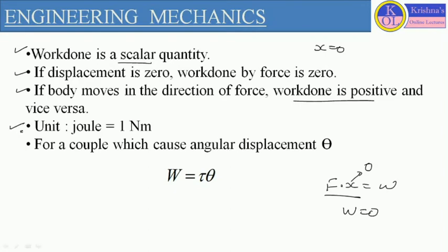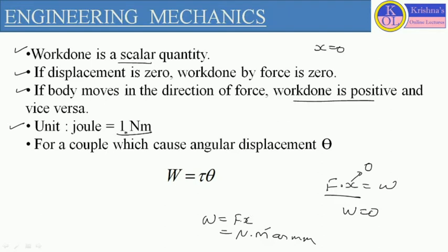The unit of work done: from the formula W equals F into x, the unit of force is newton and displacement is in meters. So the unit of work done is newton-meter, and one newton-meter is defined as one joule. So joule or newton-meter both can be the unit of work done.